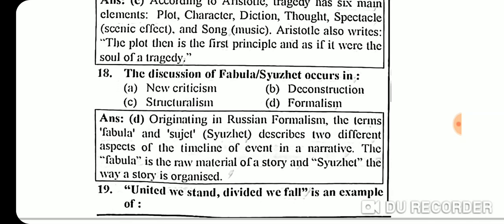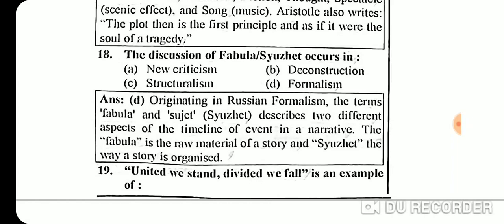Question 18: The discussion of fabula and syuzhet occurs in formalism. Originating in Russian Formalism, the terms fabula and syuzhet describe two different aspects of the timeline of events in narratives. The fabula is the raw material of a story, and syuzhet is the way a story is organized.